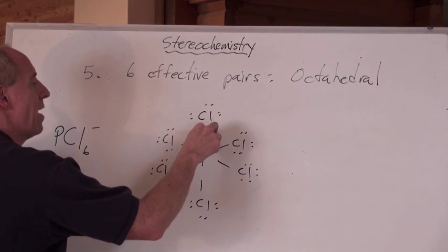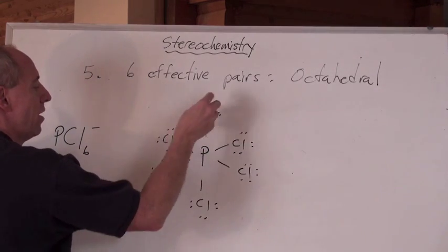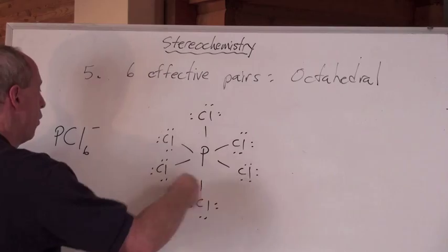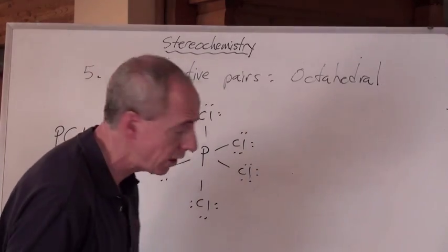And when you count up, that's two, four, six, eight. Eight times the six chlorines here is going to be 48. But when you count up the number of valence electrons here, there's 48.